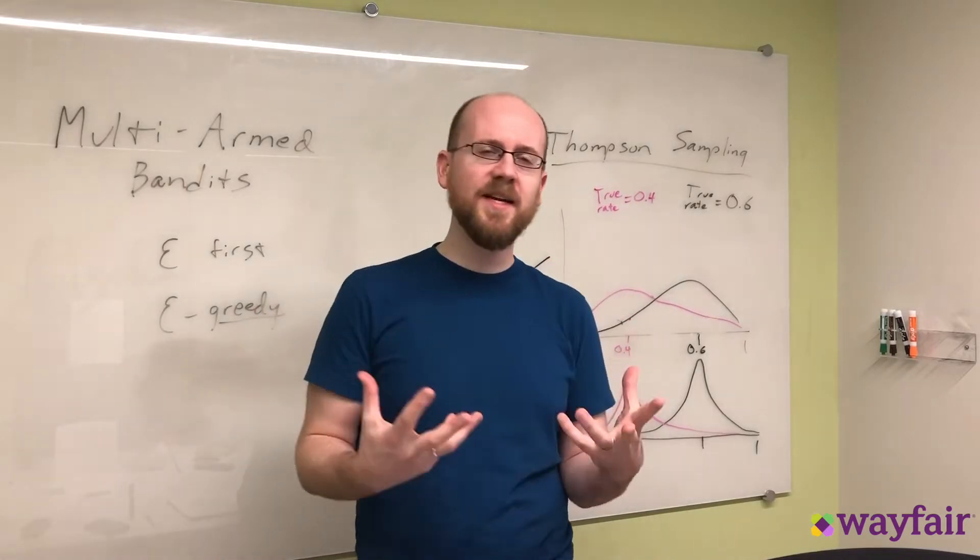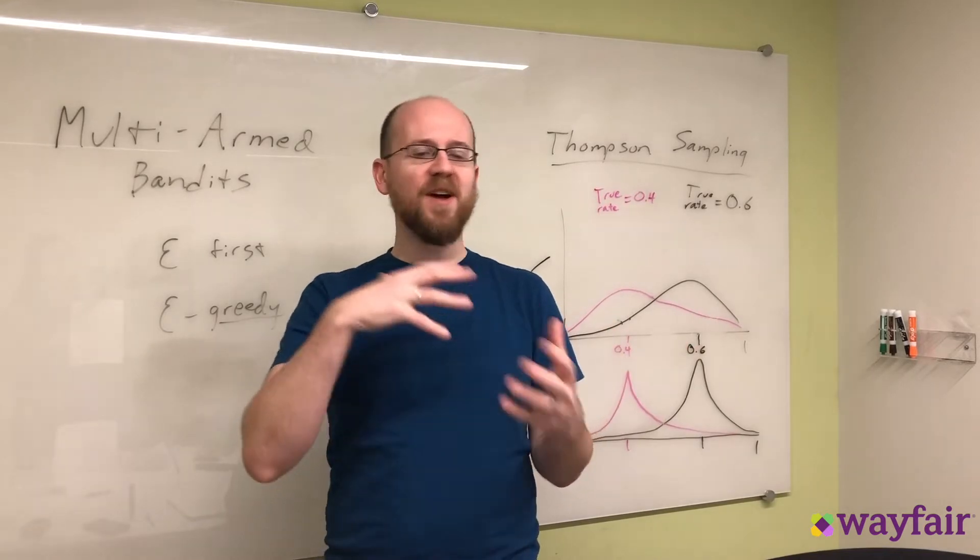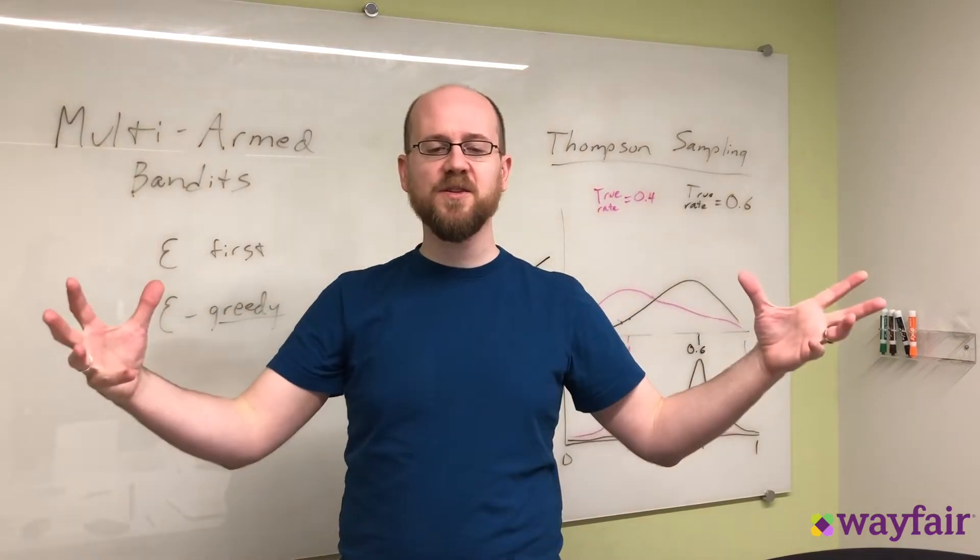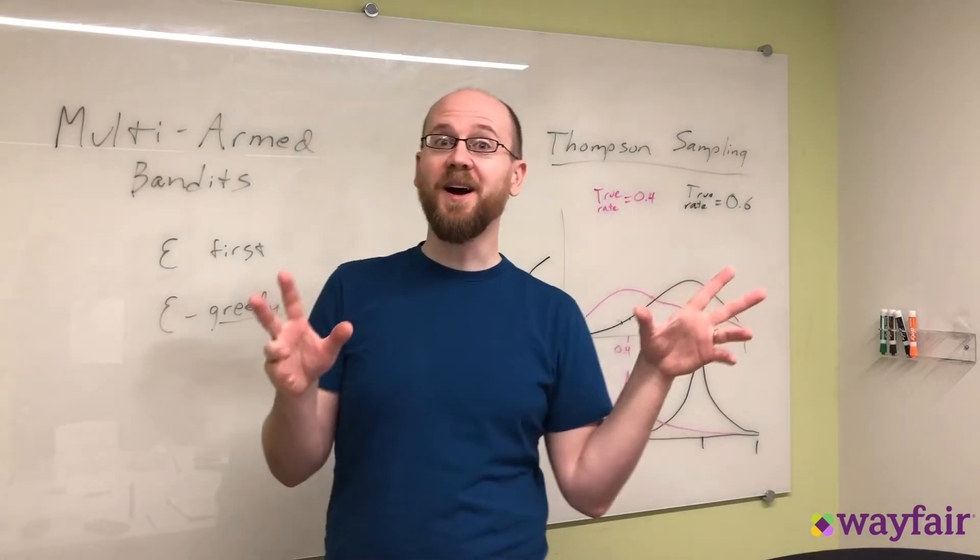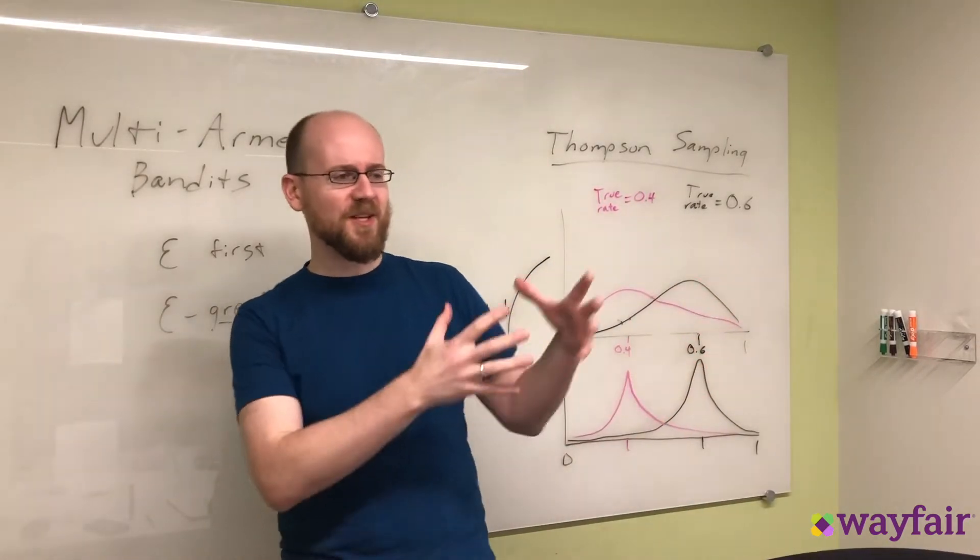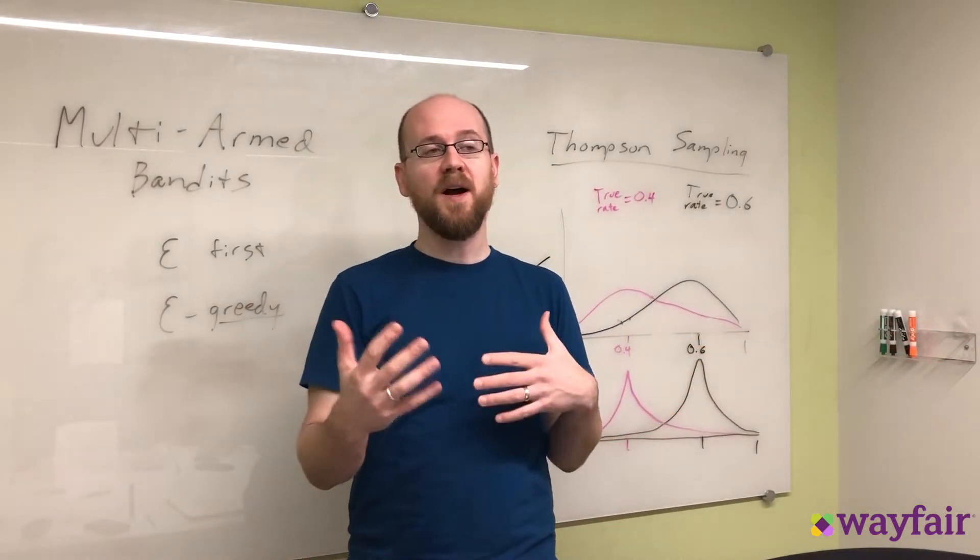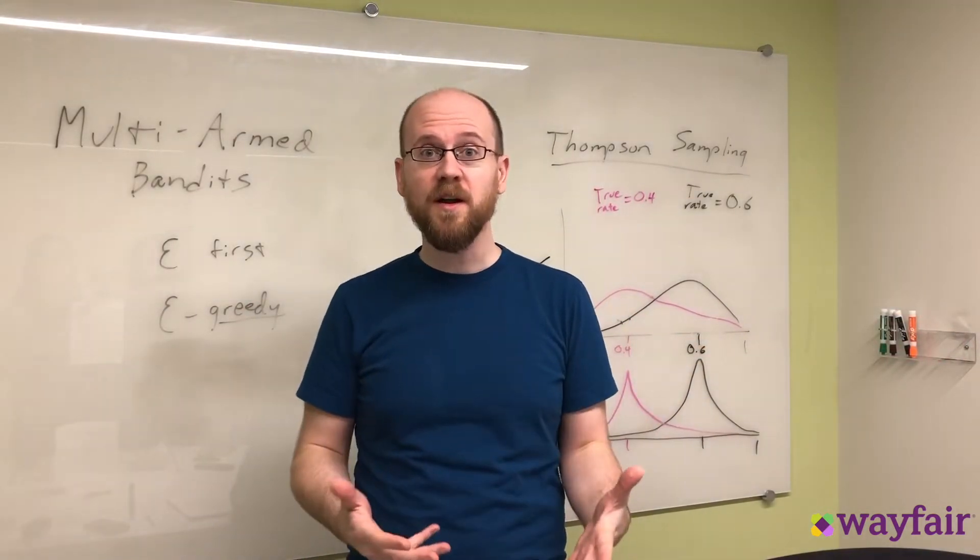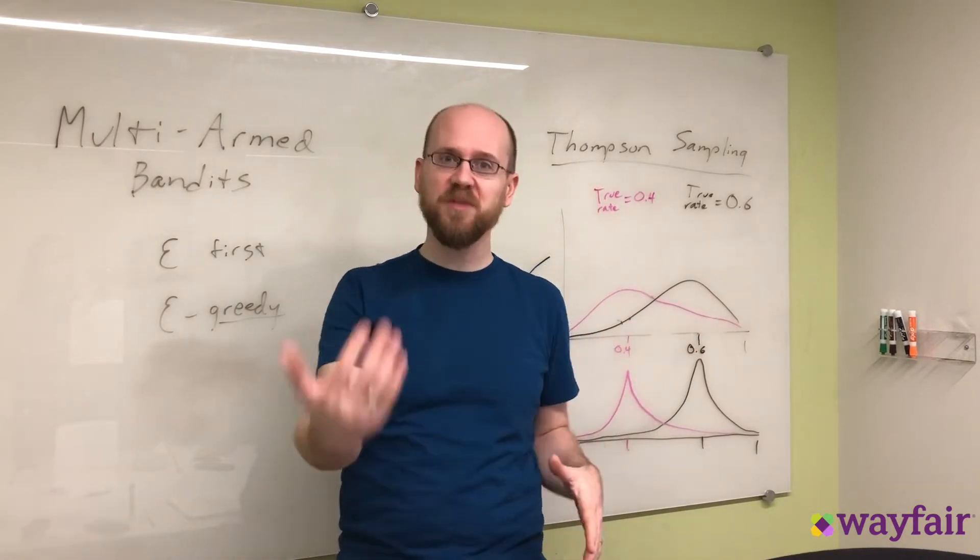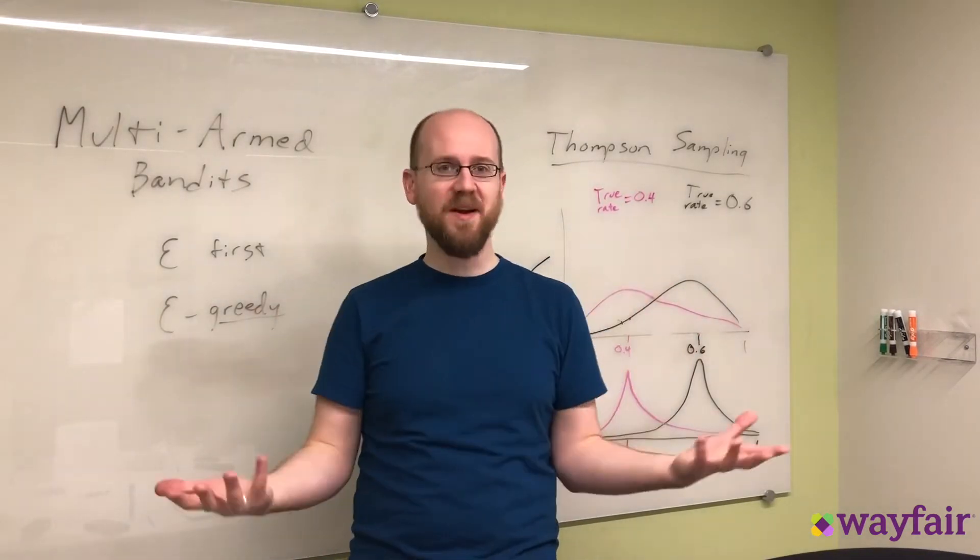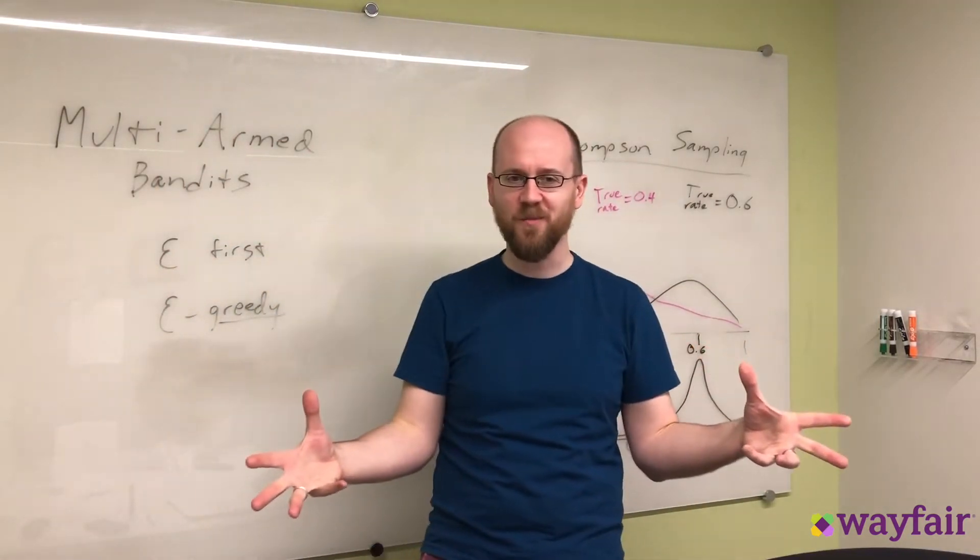The basic idea behind the multi-armed bandit in the past is that you have many of these one-armed bandits, or if you're not familiar with old-time casino slang, slot machines. So you have a whole bank of these slot machines, and they have different rates of return, and you need to figure out which one has the best rate of return so that you can then play that one and make some money. That is the conception of the multi-armed bandit problem, historically.